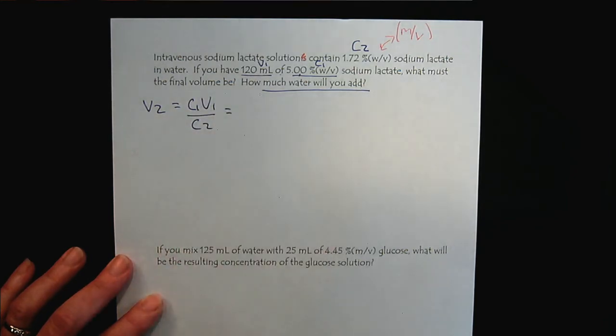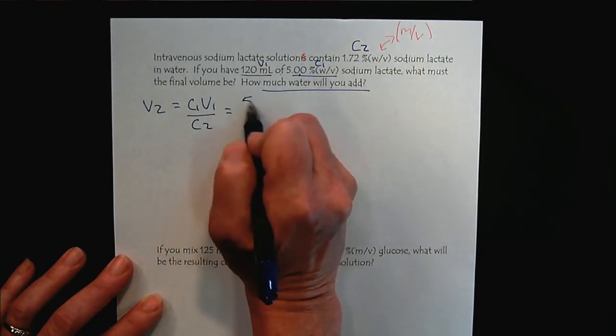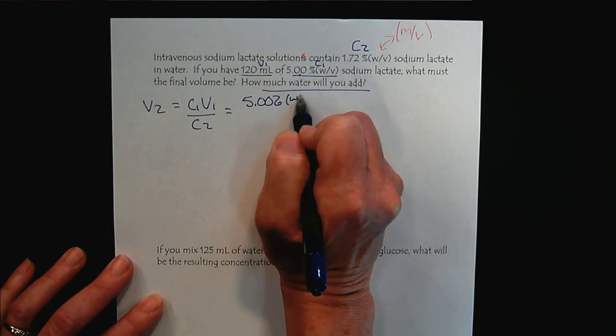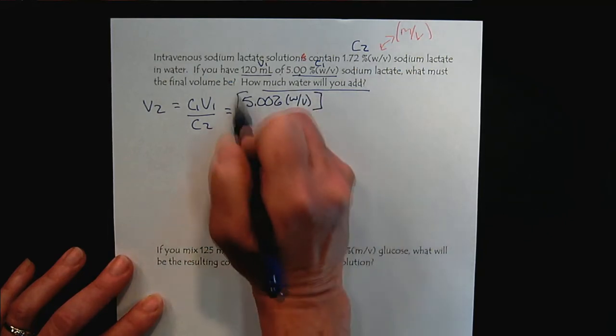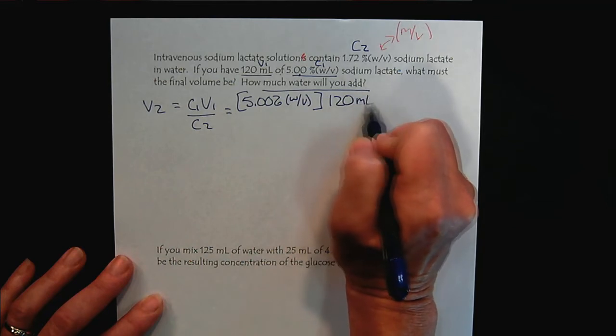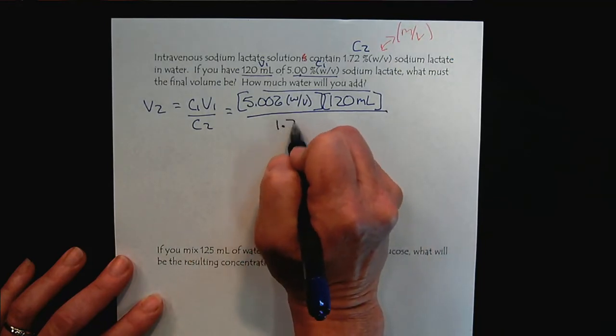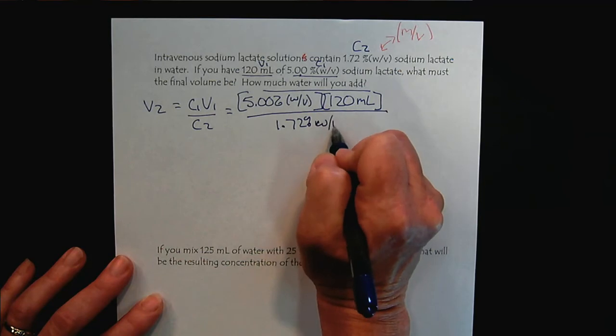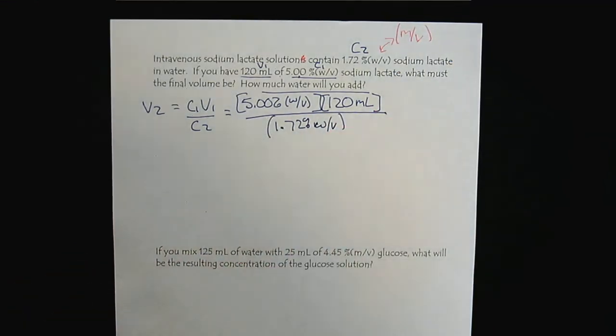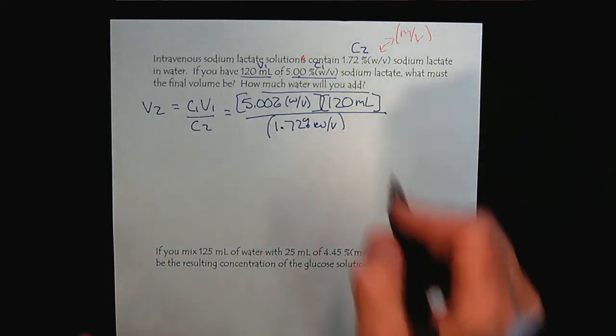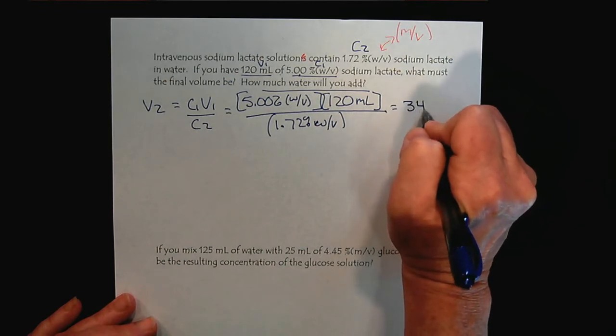From the previous page. We'll go ahead and do the calculation. We would have 5% weight over volume, and then we would have 120 mils. We want to make the 1.72 solution. We punch this result into our calculator. Yeah, that looks right. I'm going to do that one again. We would get 348.8 milliliters.